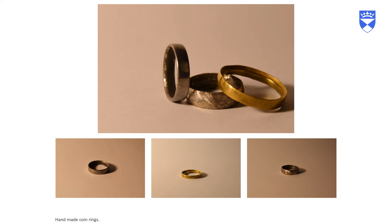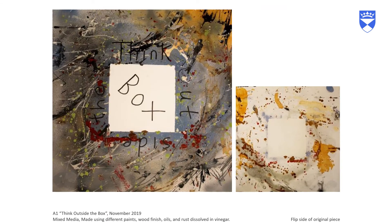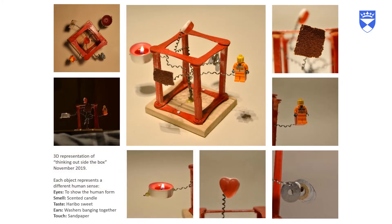Slide one shows some handmade rings reworked from old coins. Slide two is a visual representation of the project called Think Outside the Box — a mixed media drawing made using different paints, wood finishes, oils and rust found in his workshop. Slide three is an interesting small sculpture also titled Think Outside the Box, with an annotation explaining that each object represents one of the human senses.